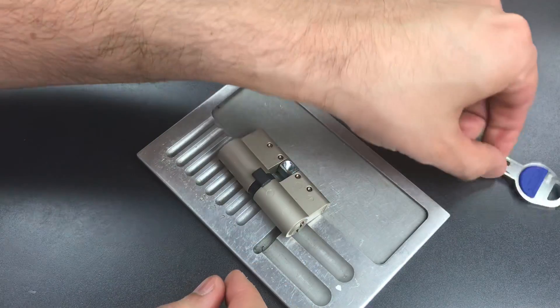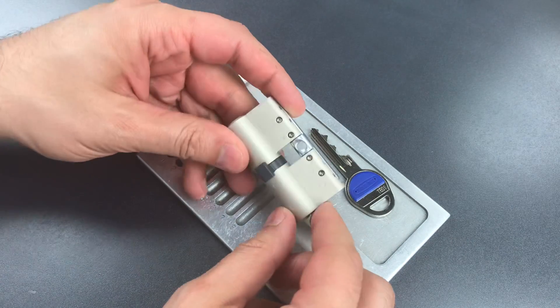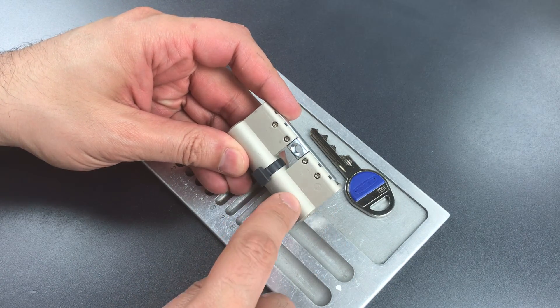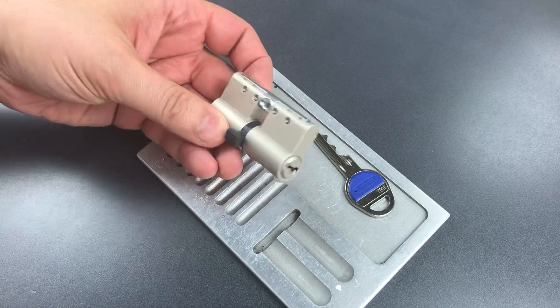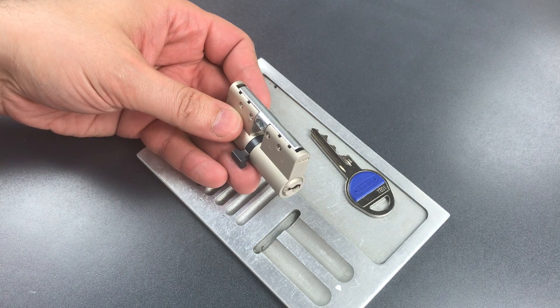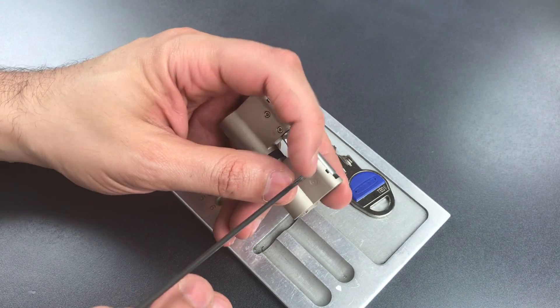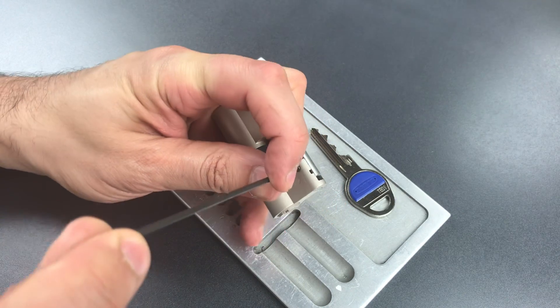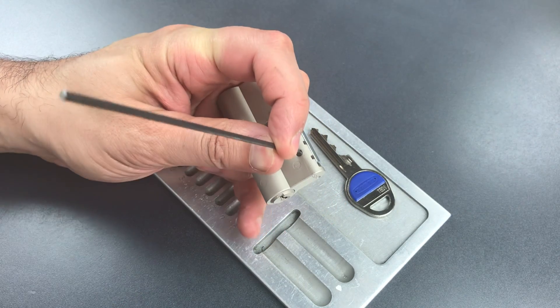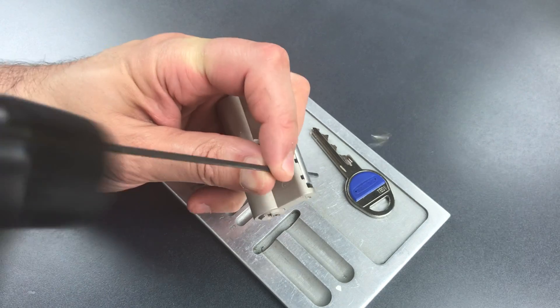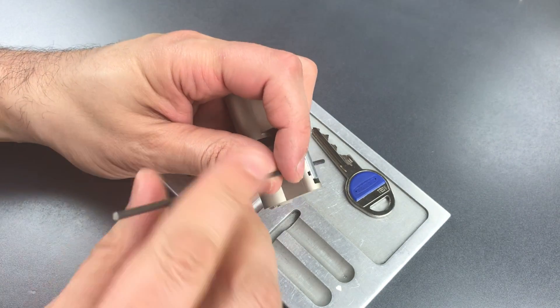To take this lock apart, we need to first remove these two pins which attach the cylinder to this spine. So let me get a small piece of wire and just tap them through. Okay, we got one out.